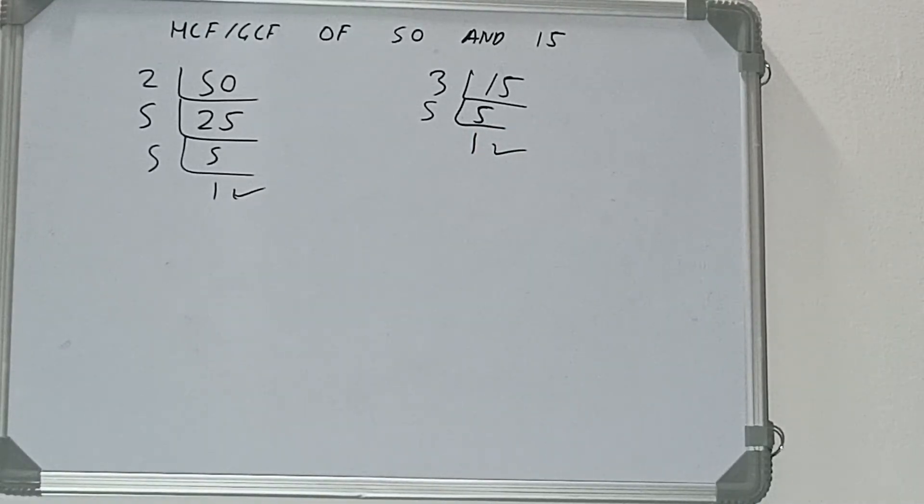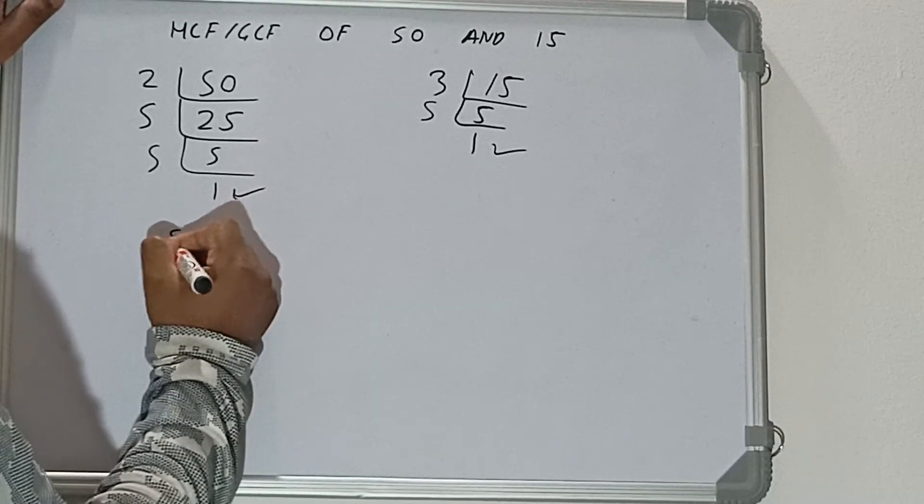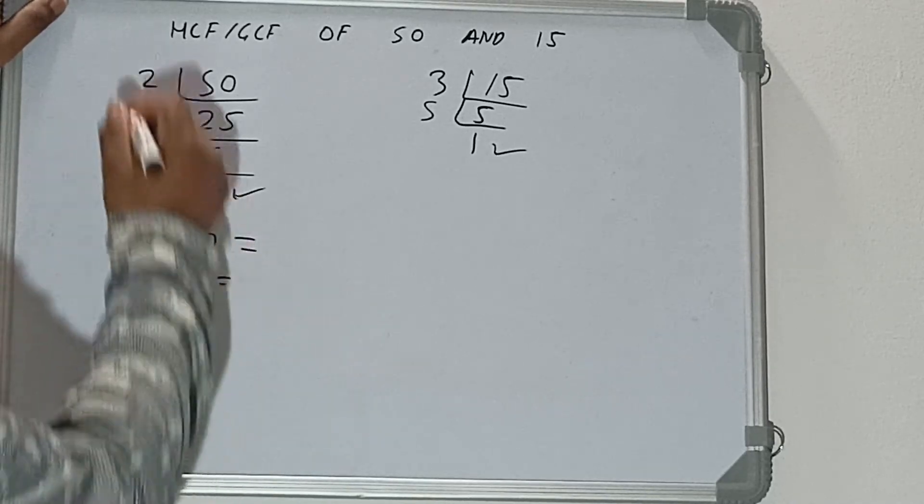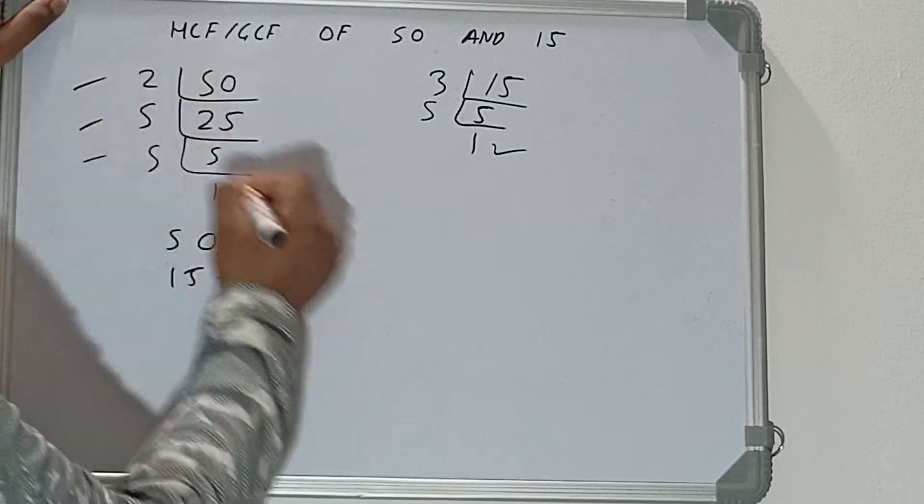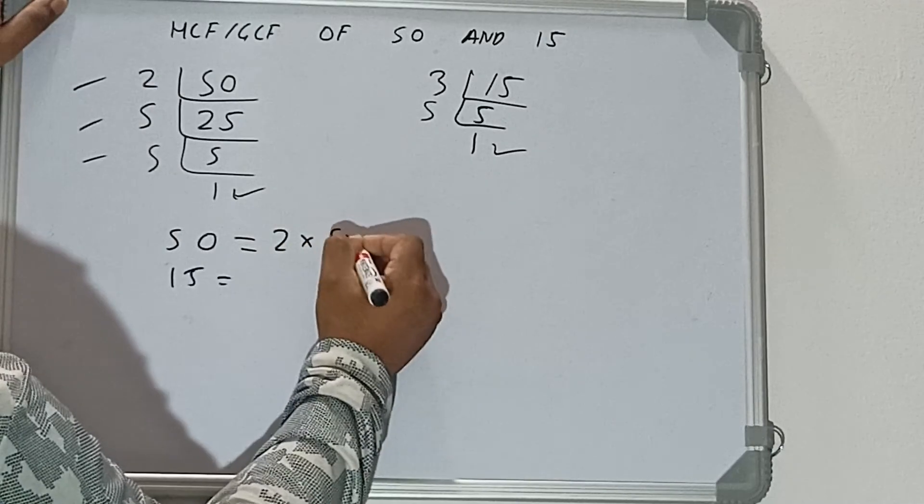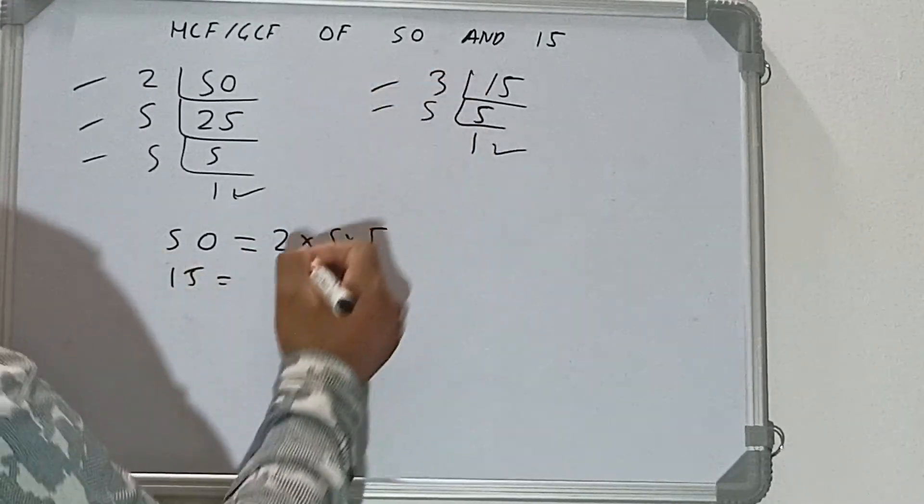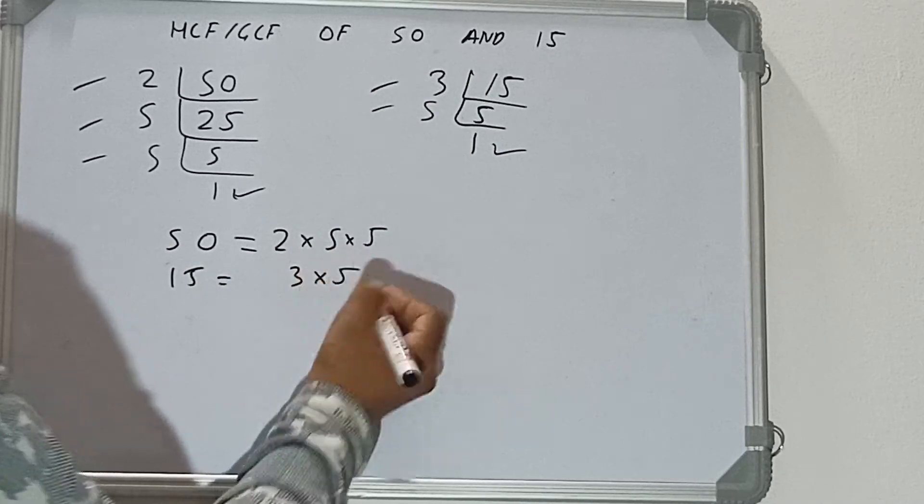For 50, what we got: 2 × 5 × 5. For 15, what we got: 3 × 5. Now we need to circle out the common prime factors among both. If we check, we have only 5 in common.